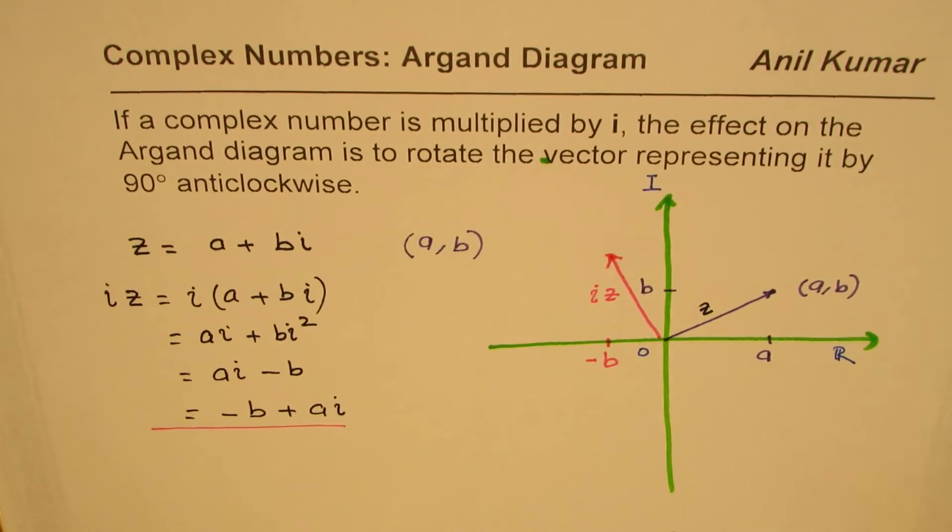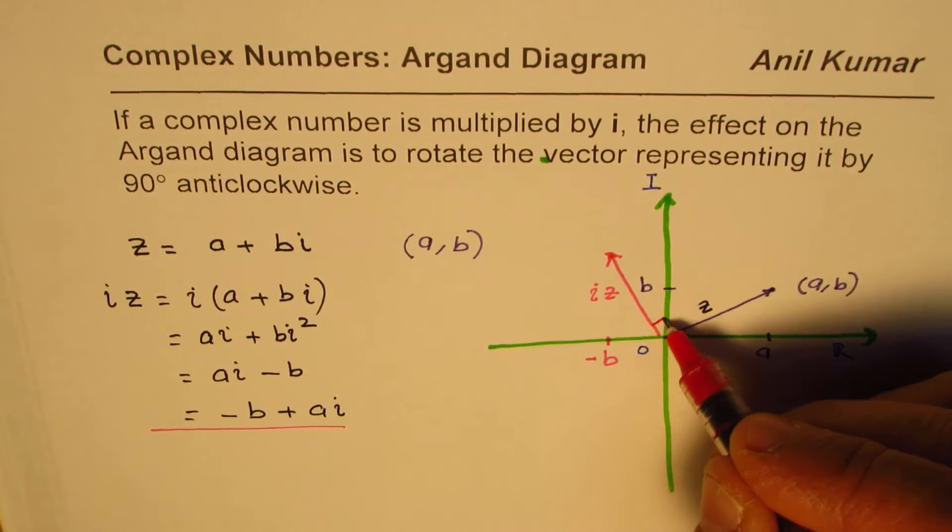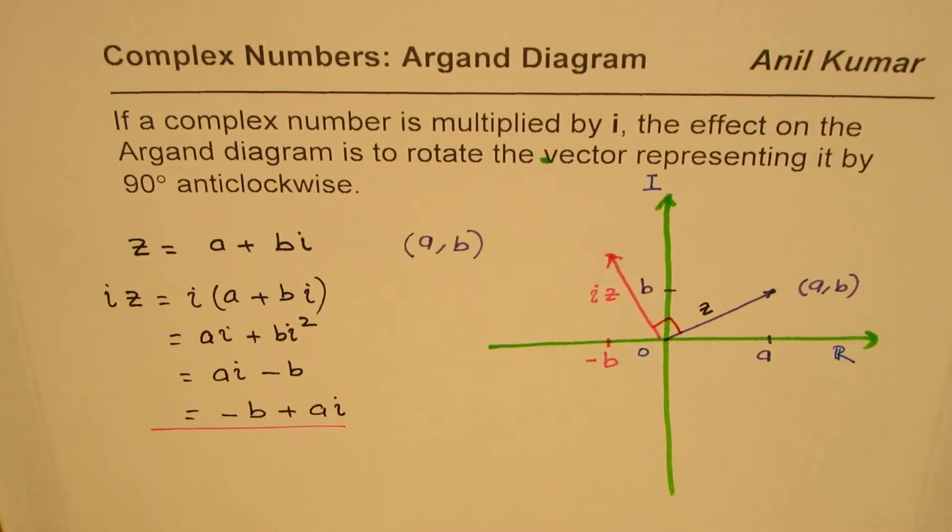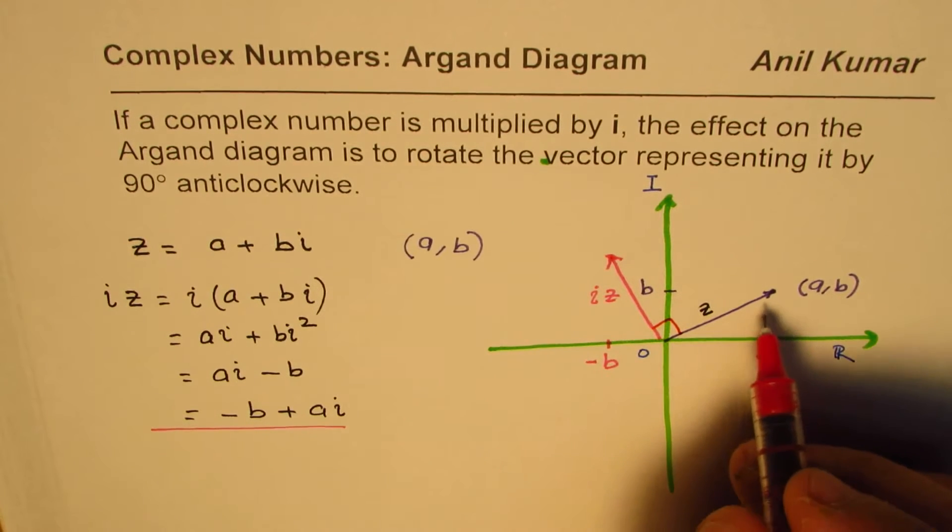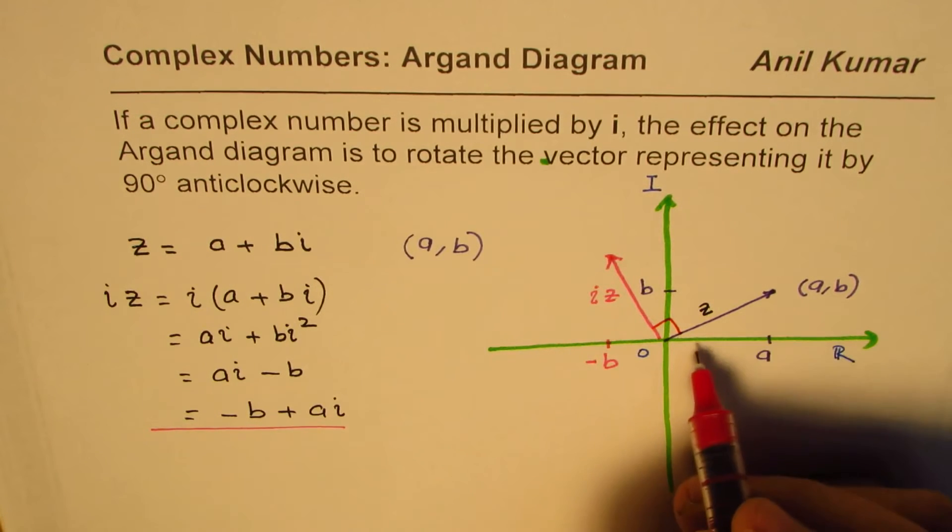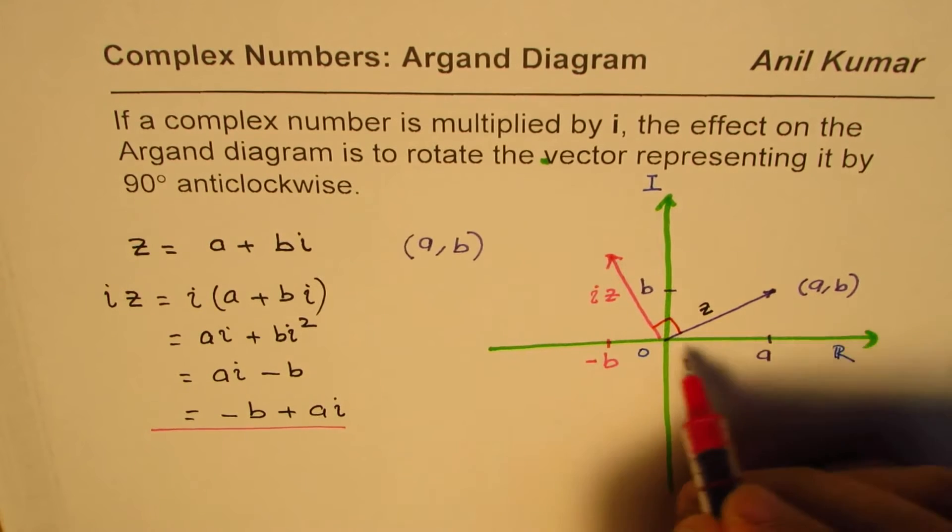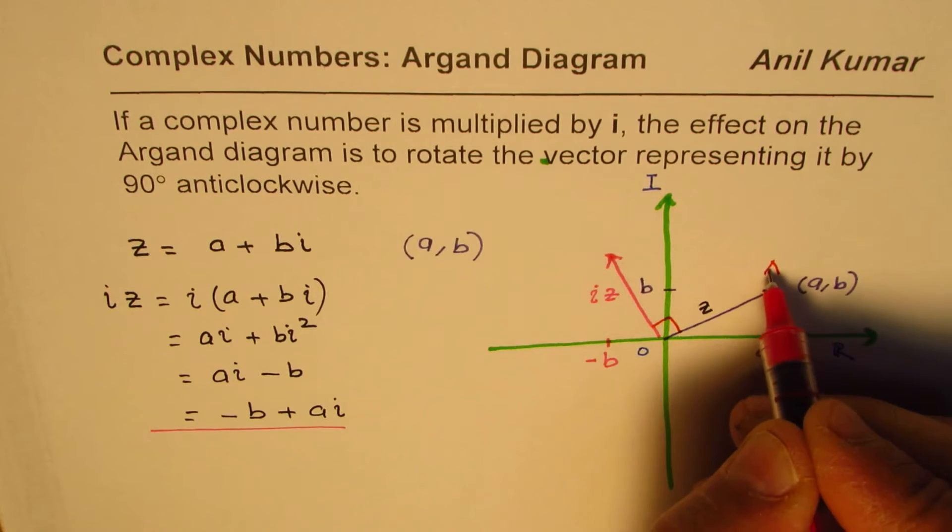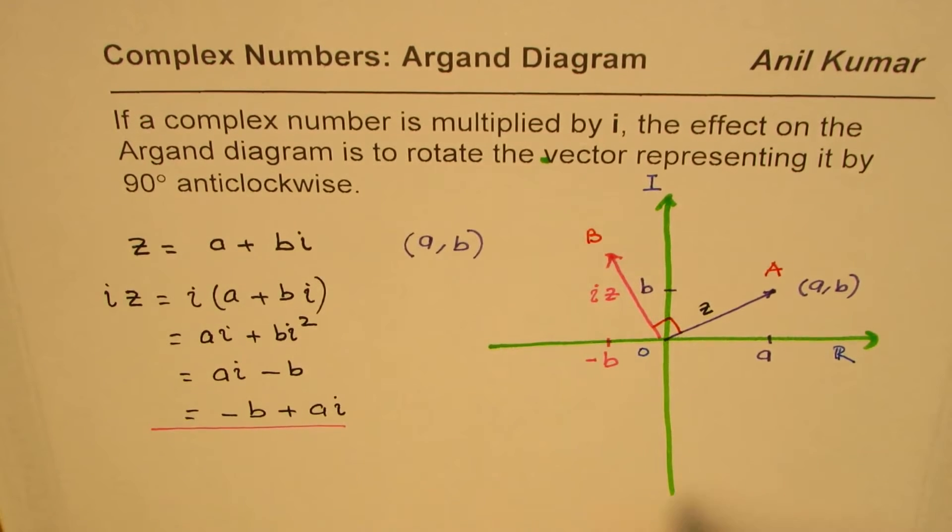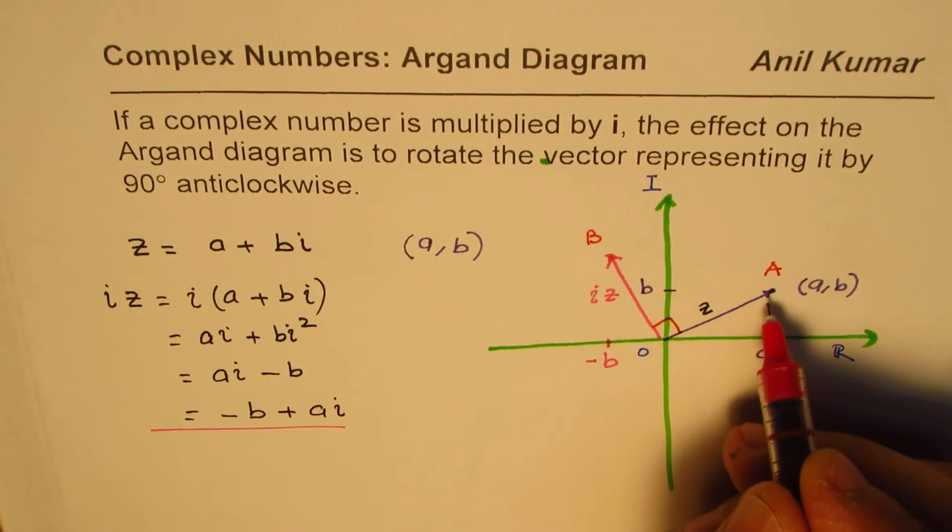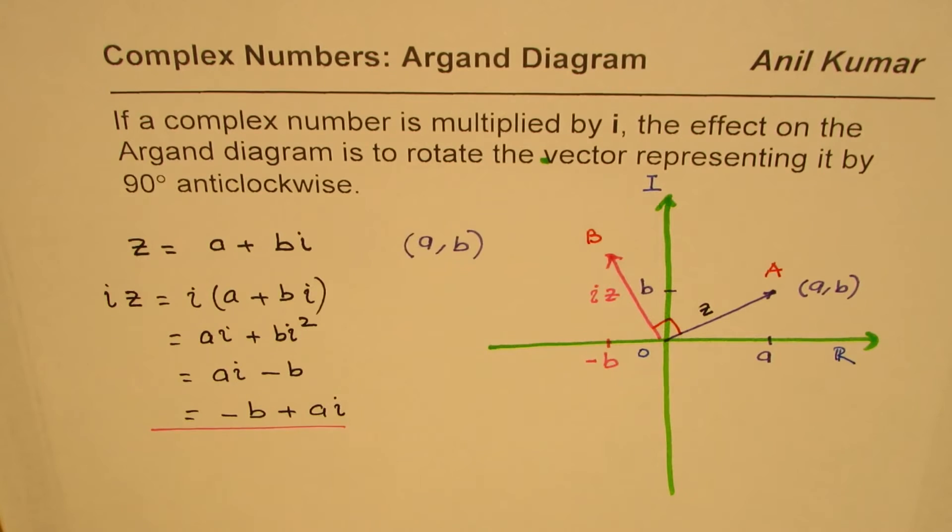It looks as if it has rotated counterclockwise by 90 degrees. How can we be sure about it? Well, let's find the angle, right? So, in this particular case, in the first place, let's say this is point A. And here we go to point B from the origin. The slope of this line is how much? Let's calculate that slope, right? That should help us to find the angle.